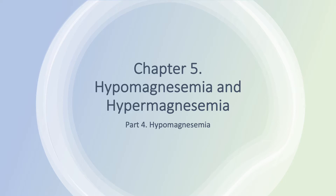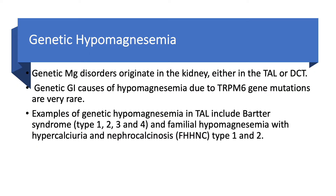We are still on Chapter 5, Hypomagnesemia and Hypermagnesemia, and still discussing hypomagnesemia. What about genetic hypomagnesemia? This is not very common, but it is very interesting from a pathophysiology standpoint, and you can see questions on any exam. Genetic magnesium disorders originate either in the kidneys or in the GI tract.